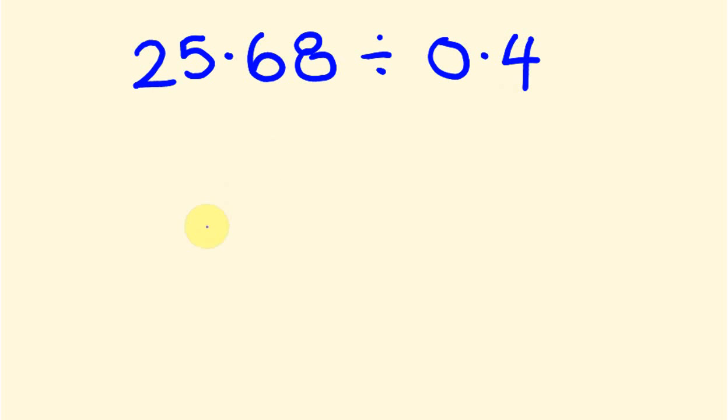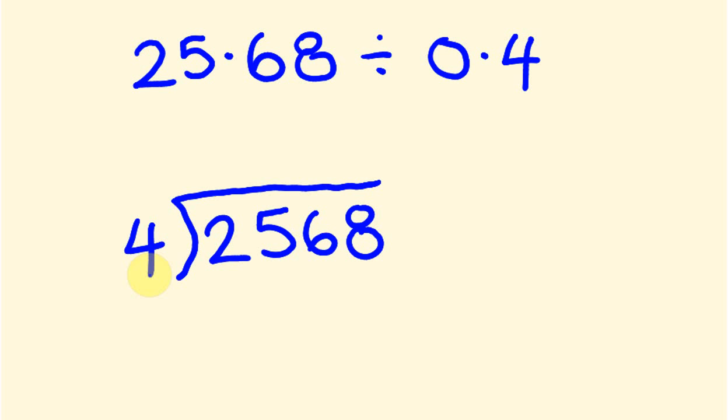So first off let's do this. 2,568 and we're going to divide this by 4. Now 4 into 2 we cannot do so I put a 0 there. 4 into 25 that goes 6 times because 6 times 4 is 24 and we're going to carry the 1 because there's 1 left over. 4 into 16 goes 4 times with no remainder and 4 into 8 goes 2 times so our answer is 642.